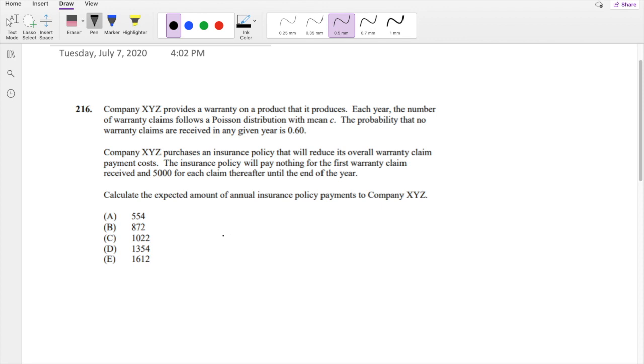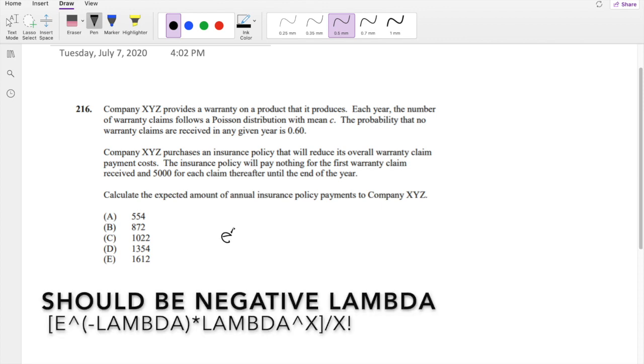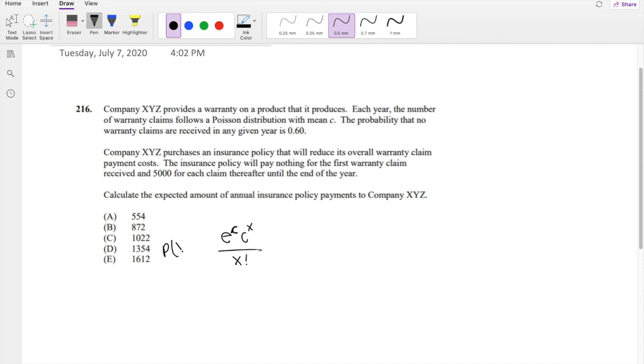So that means E to the lambda, or lambda where lambda is C, E to the C, C to the X over X factorial is the probability of X is equal to some X. The probability that no warranty claims are received in any given year is 0.6.